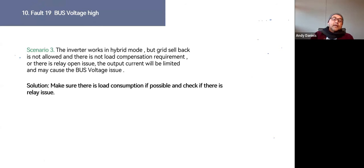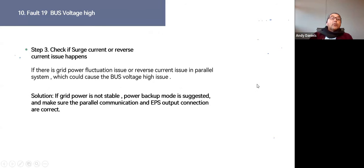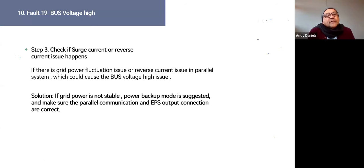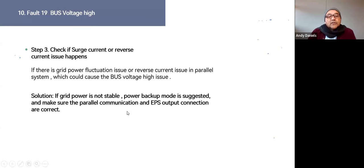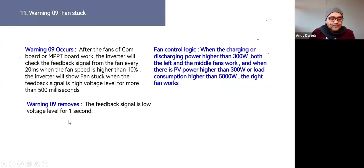This training is particularly useful because it gives installers and tech support more detailed information to work with — helping solve problems more effectively rather than simply clicking firmware update. Bus voltage high can also be caused by grid power fluctuation or reverse current in a parallel system. If grid power is unstable, go to backup mode, and in a parallel setup ensure parallel communication and EPS are correctly configured.